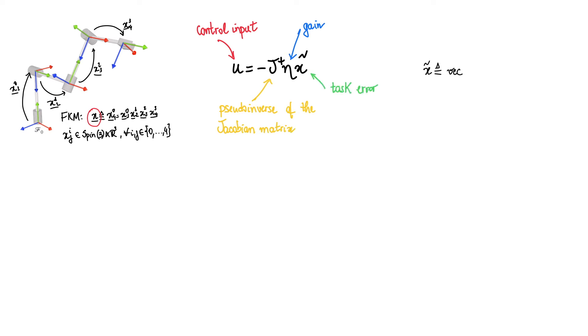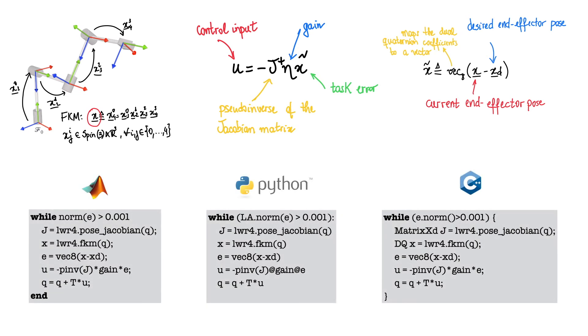One way of defining the pose error is to take the difference between the unit dual quaternion that represents the current end-effector pose, and the unit dual quaternion representing the desired end-effector pose. The vec operator maps the dual quaternion coefficients to a vector. We have here code snippets implementing this control law for the three languages supported by Diki Robotics.